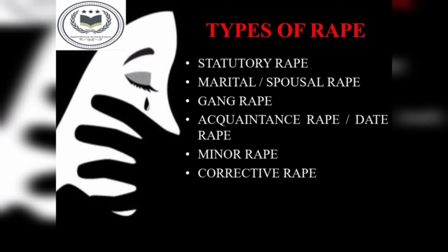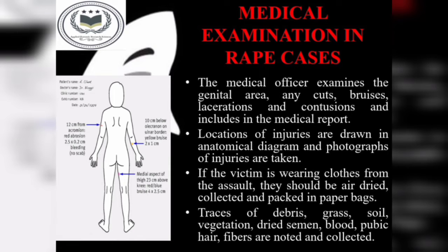The medical officer examines the whole body and mentions all types of injuries present on the body in the medical report. An anatomical diagram is made by the medical examiner in which all injuries and scars are presented. It is mainly used as medico-legal evidence and is a very important evidence in child sexual assault cases.